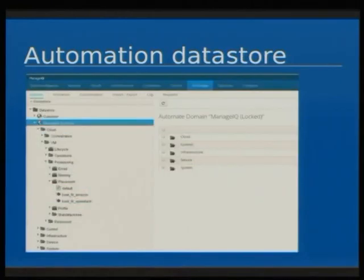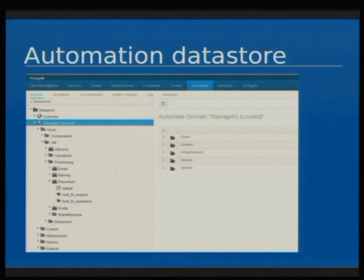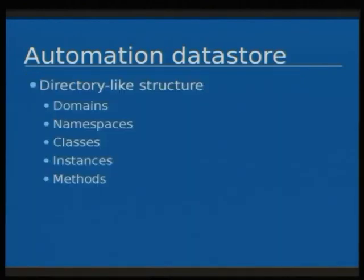Let's start with the basics. The very basic building block of Automation in ManageIQ is the Automation Datastore. When you navigate to Automate Explorer, you're presented with a tree structure - that is the Automation Datastore. It's a tree-like, directory-like structure with items of several types: domains, namespaces, classes, instances, and methods.